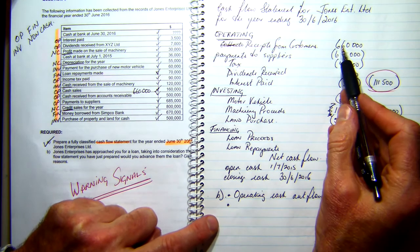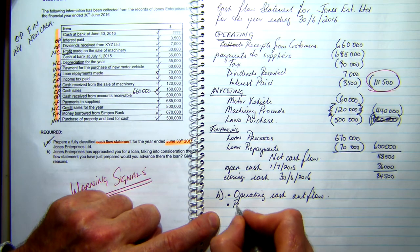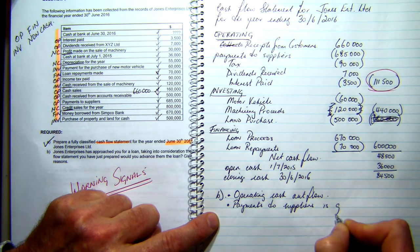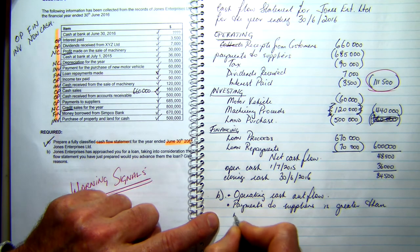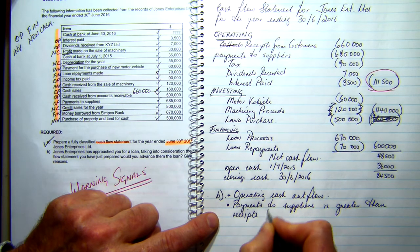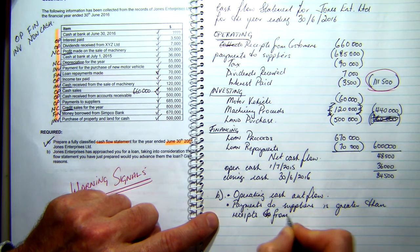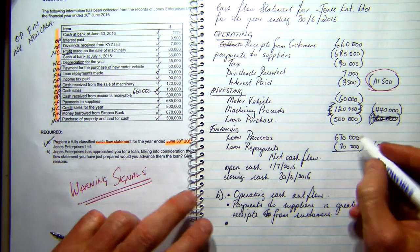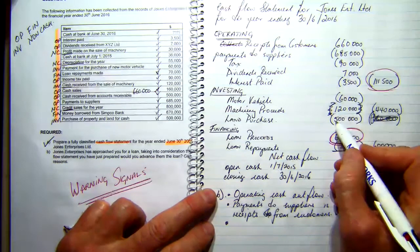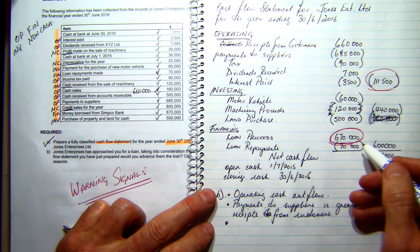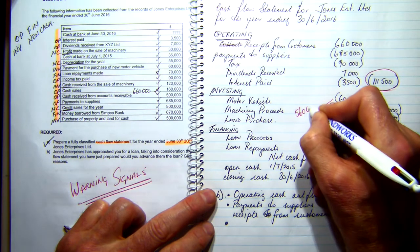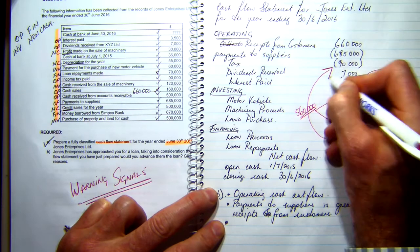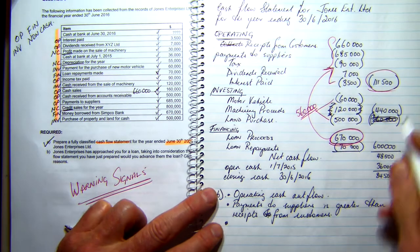The second warning signal is that payments to suppliers is greater than receipts from customers. The third warning signal comes from the loan proceeds. I borrowed $670,000, so I should expect to see at least an outflow in investing activities of $670,000, but I've only got investing outflows of $560,000. That means $110,000 of that borrowed money is being used up in operations — not in investing assets. So that's another warning signal.